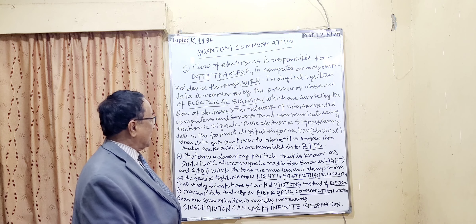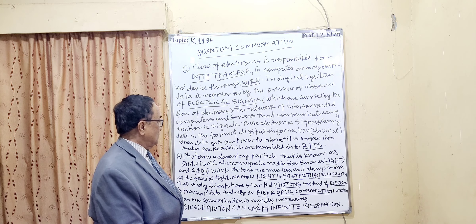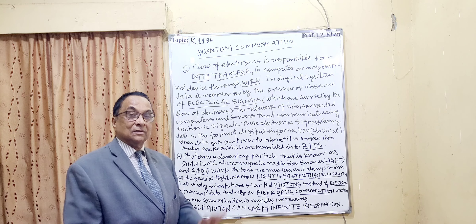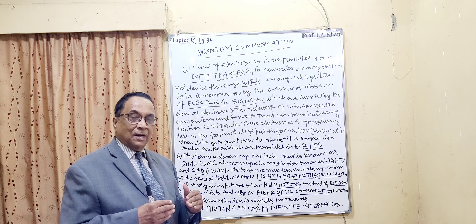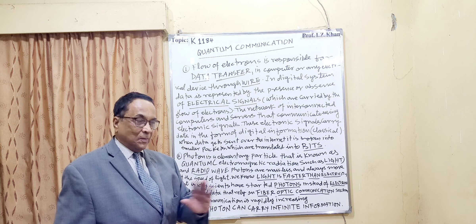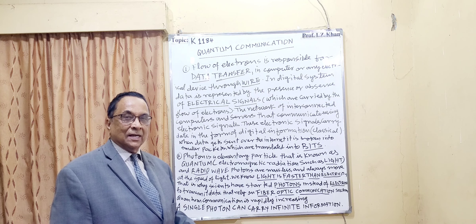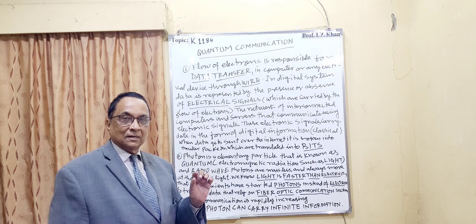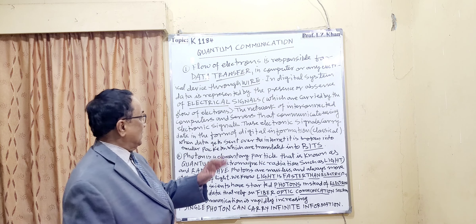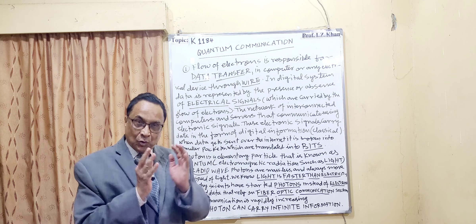When data gets sent over the internet, it is broken into smaller packets, which are translated into bits. In the form of bits, it is broken and passed, and that is how we receive it in the form of numbers, images, video, or text — broken bit by bit. Just like a house where one block is a bit. The second one is photon — information is carried by photons. Photon, as I already told you, is the bundle of energy — electromagnetic radiation.